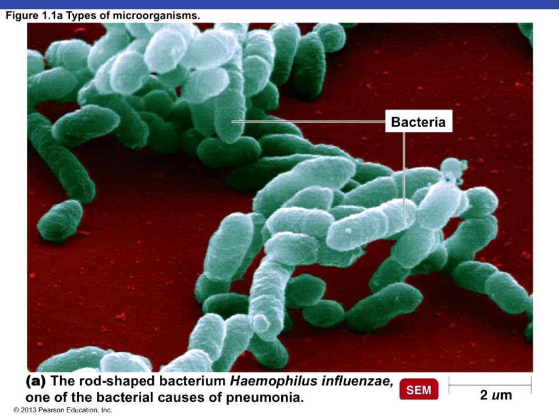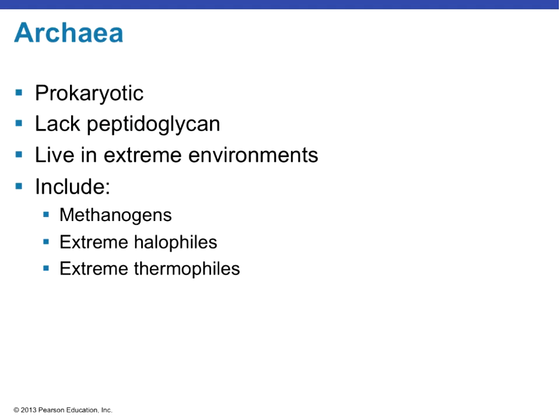Here we have a rod-shaped bacterium — if it's a rod, it's called a bacillus. Haemophilus influenzae is one bacterial cause of pneumonia, and we'll talk about that more after spring break. Bacteria that can use inorganic chemicals help us decompose waste and also clean up things like oil spills in a process known as bioremediation.